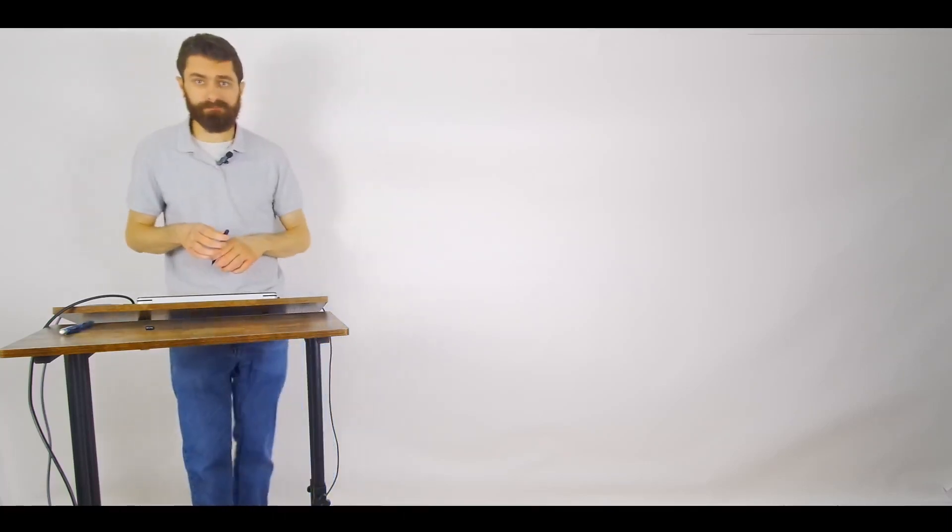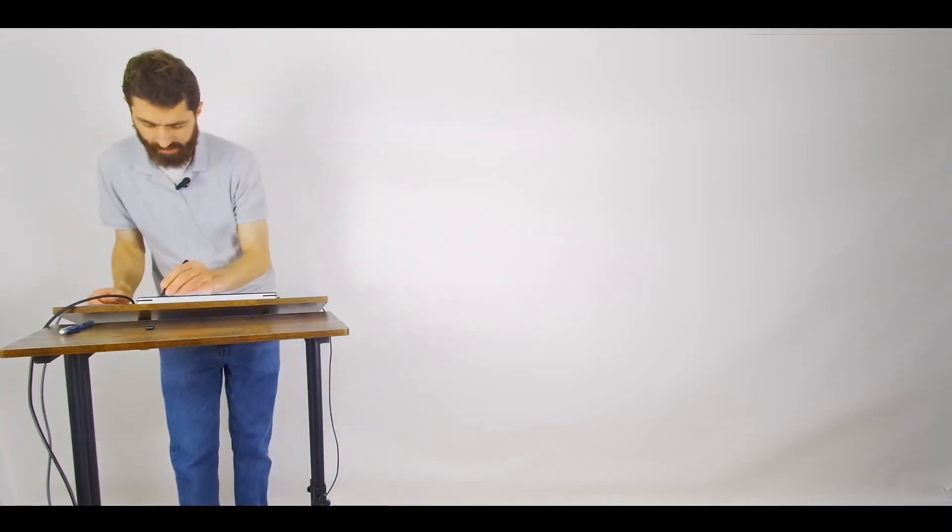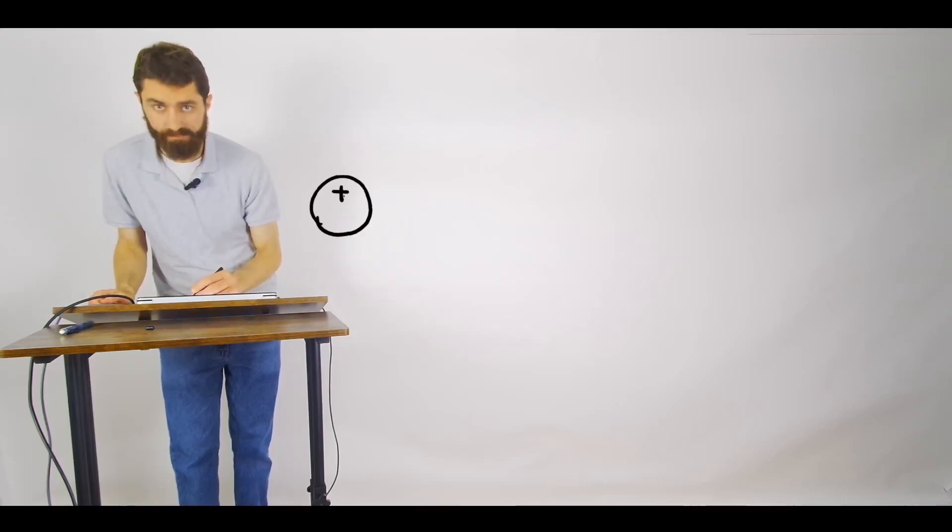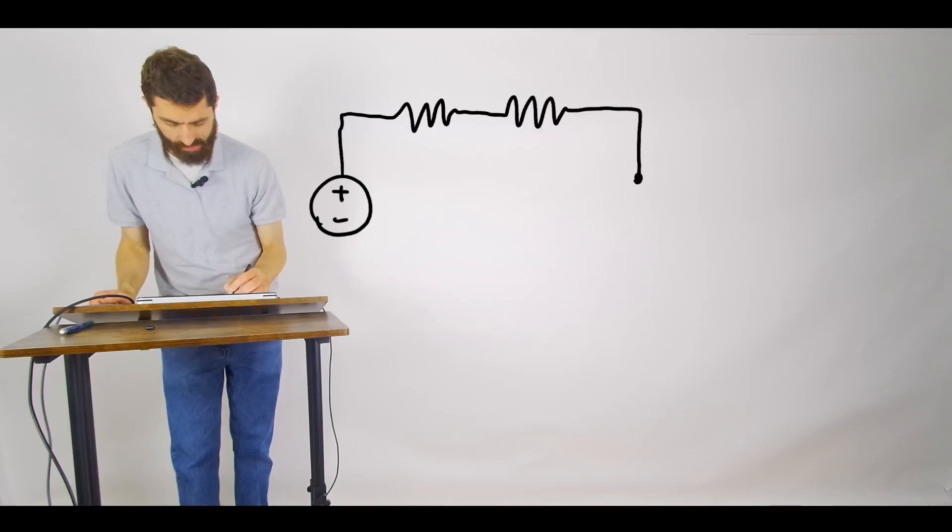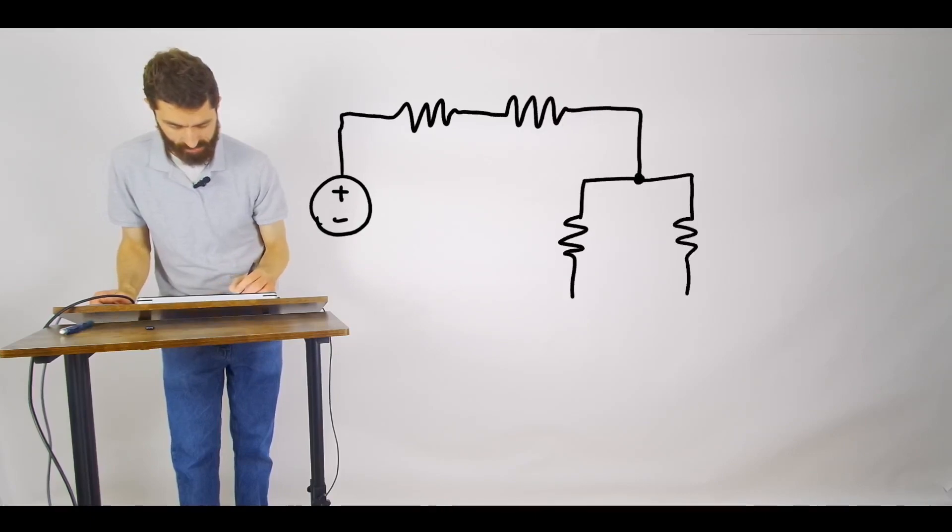So I'm going to begin with a simple example that will allow us to apply Kirchhoff's voltage and current laws as well as Ohm's law. So the circuit is a voltage source with two resistors in series and then two resistors in parallel.